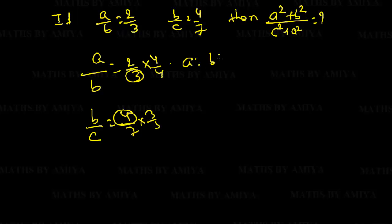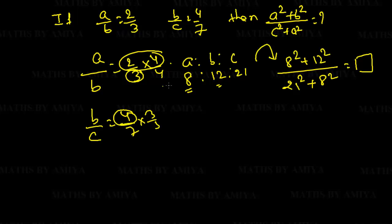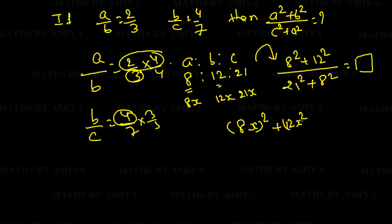After equating, A becomes 8, B becomes 12, and C becomes 21. We need to find A² + B² upon C² + A², so we put 8² + 12² upon 21² + 8². We can say the numbers are 8x, 12x, 21x, so the x² cancels out, giving us the ratio directly. We compute and get the answer.